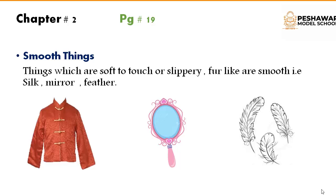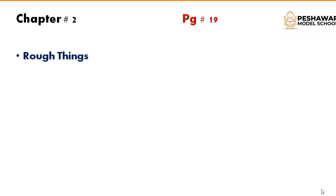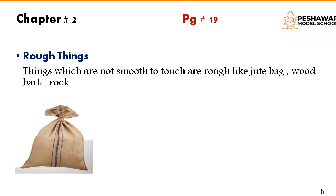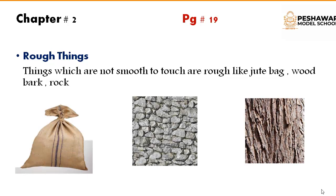And the last one is rough things. Things which are not smooth to touch are rough, like a jute bag, wood bark, and rock. For example, if you touch a jute bag it is very rough. If you touch the wood bark it is also very rough. And the rock wall is also very rough. That is why these are called rough things.